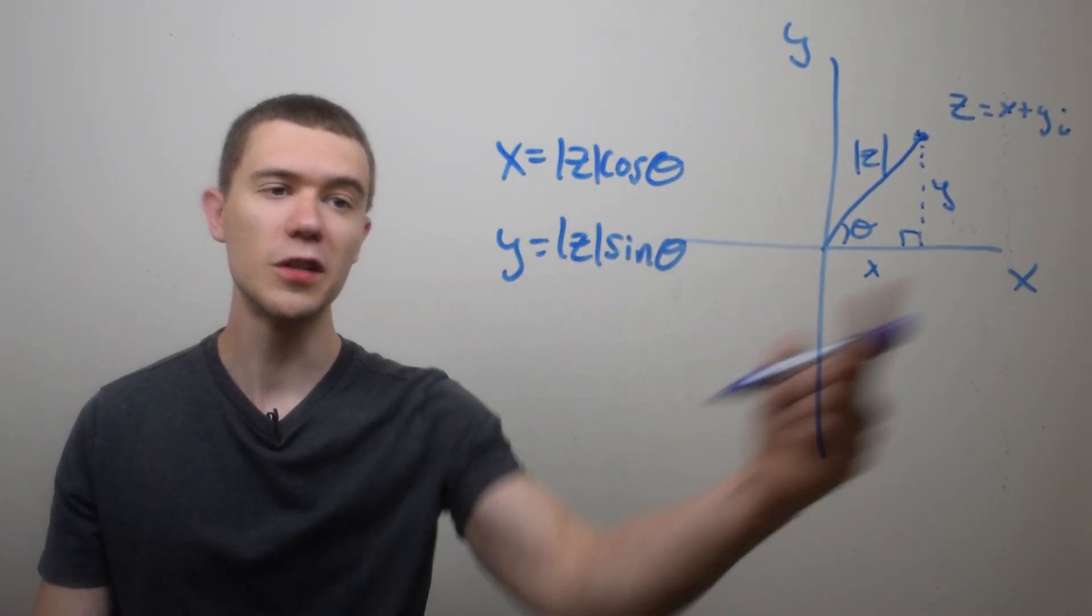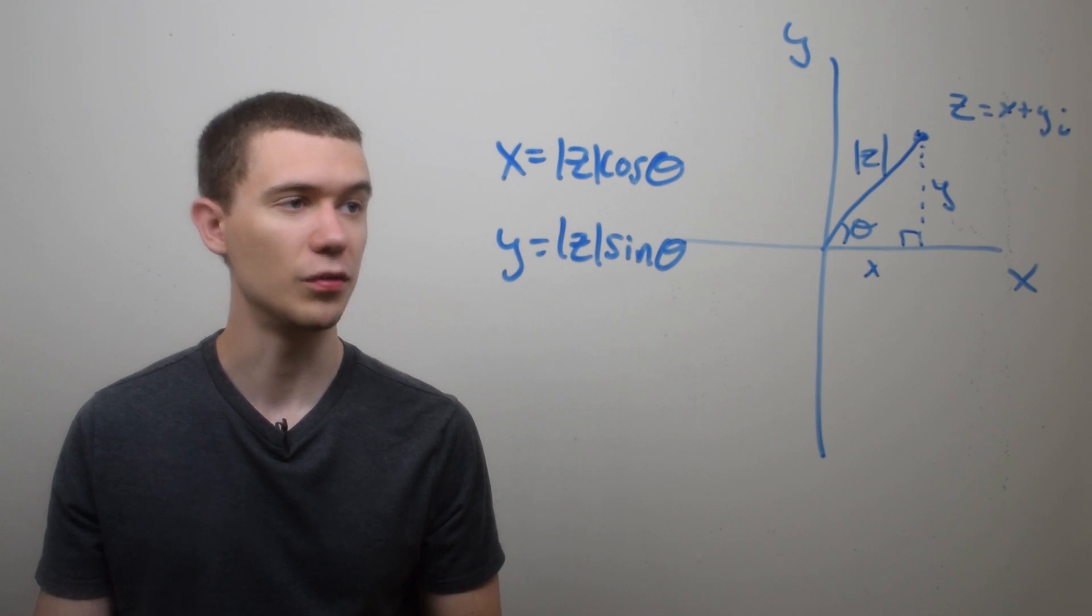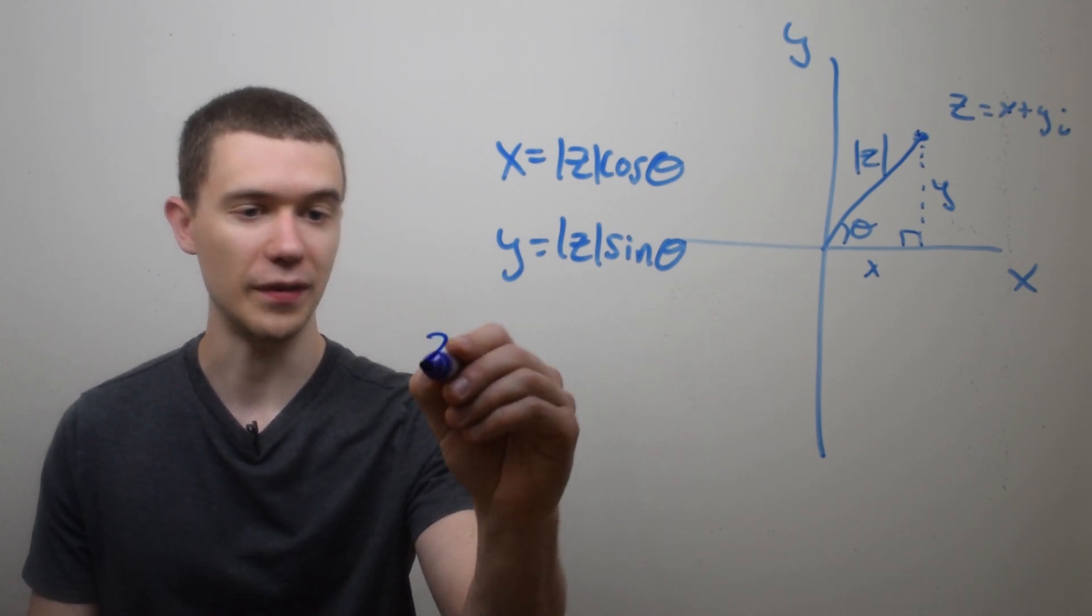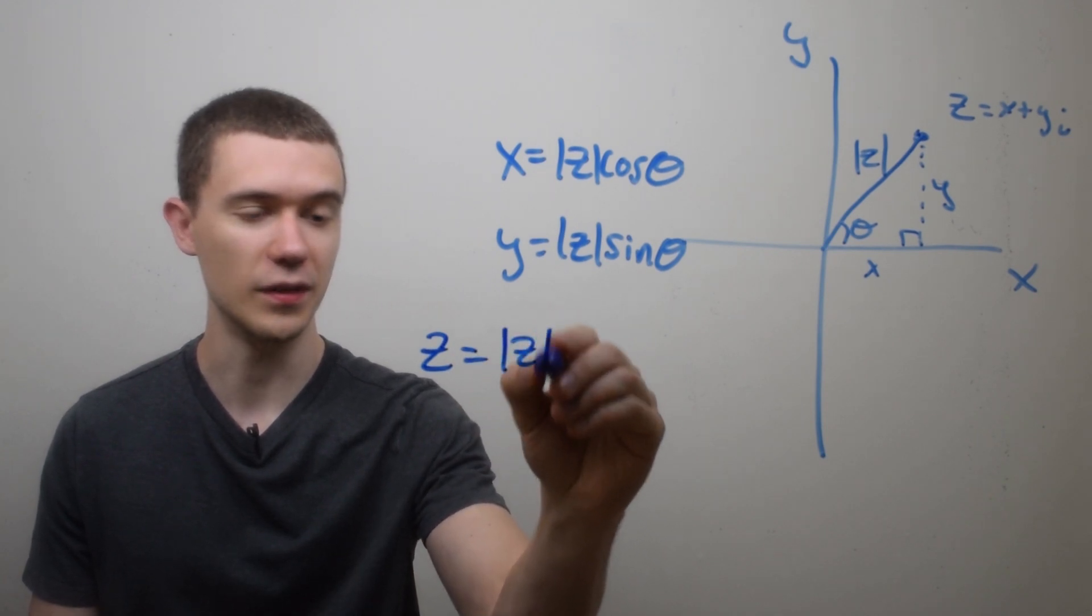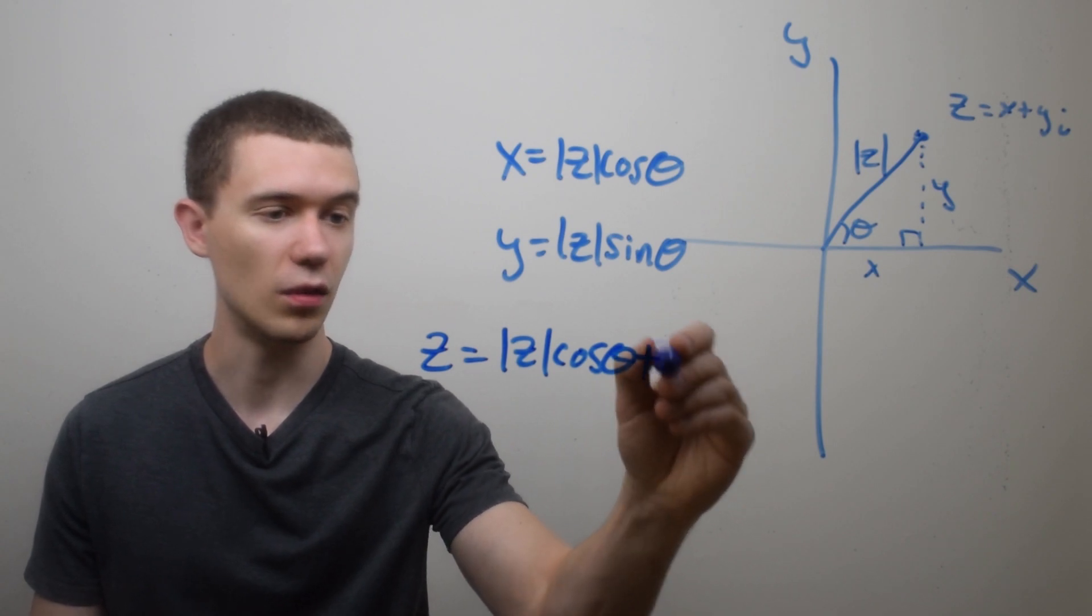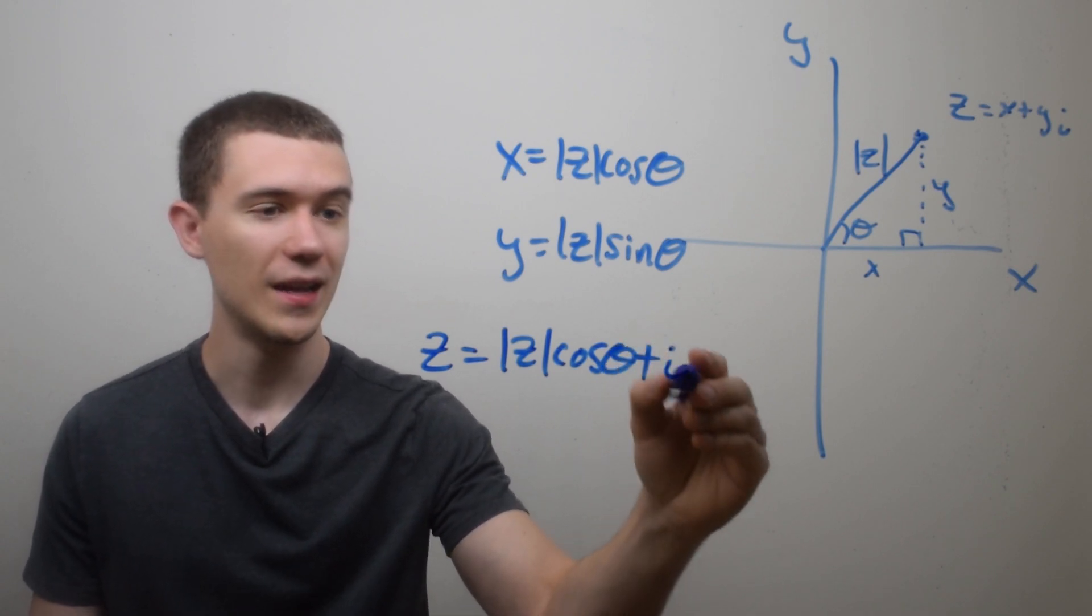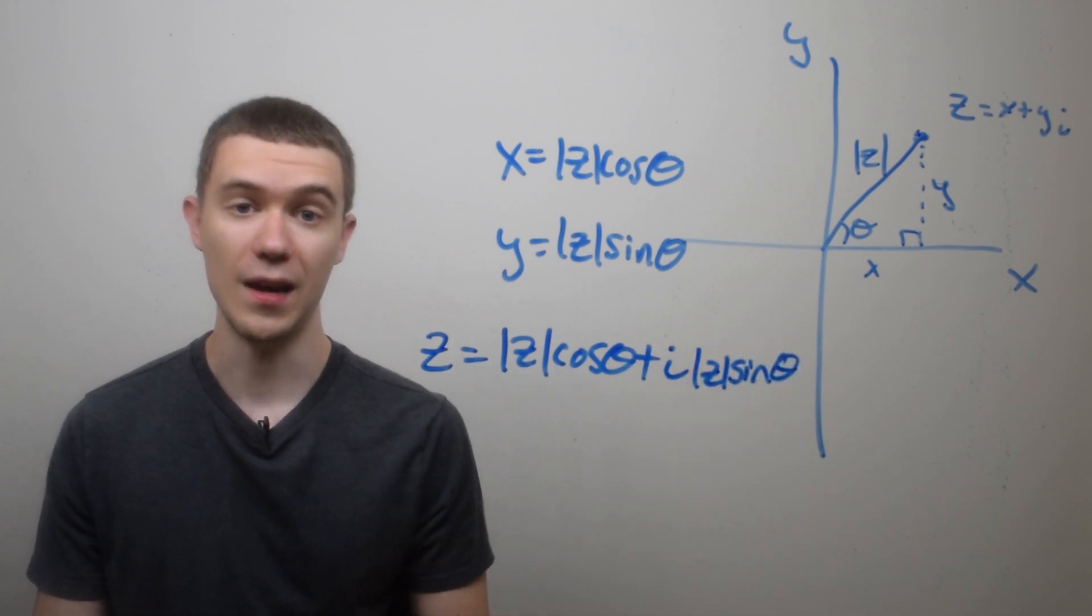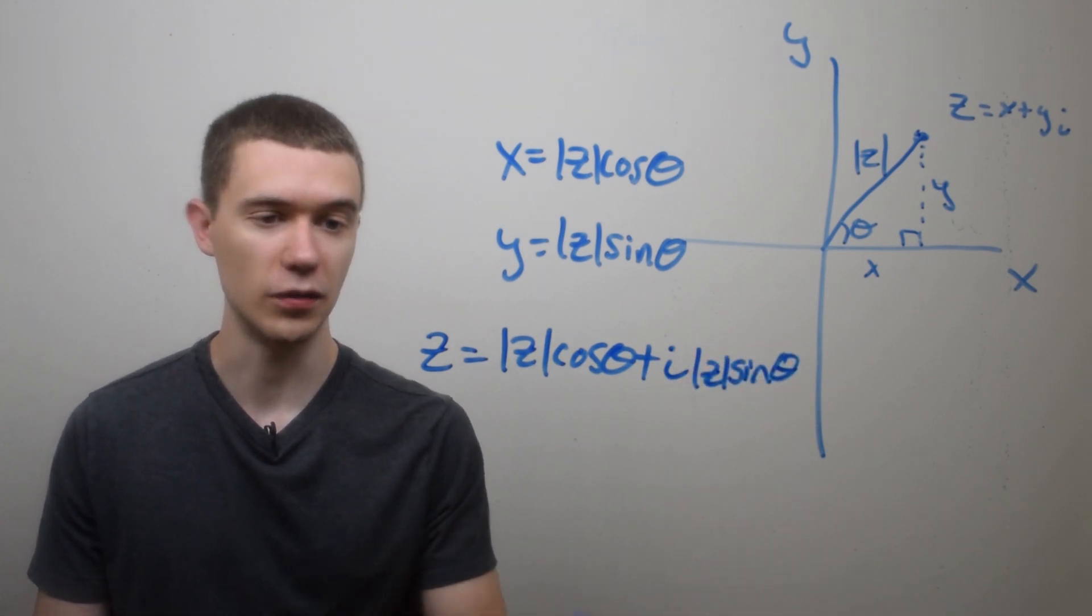And if I just substitute these values into my z equals x plus yi equation, we have the polar form. So I've got that z is equal to x, which is the modulus of z cosine theta, plus y, or maybe I'll write it like iy, times the modulus of z sine theta. And if you like, you can factor out that modulus of z.